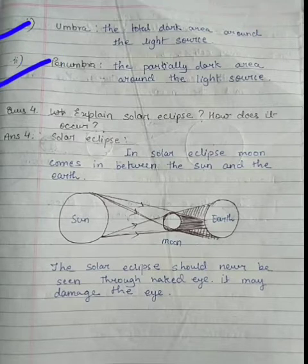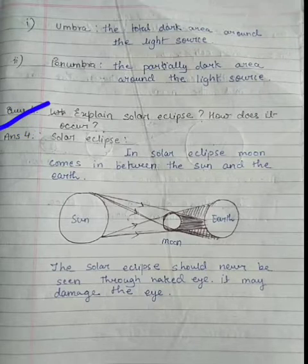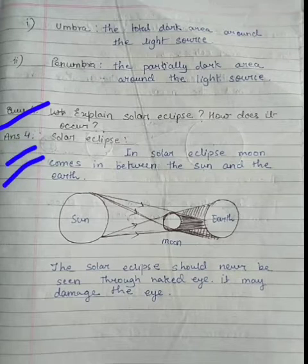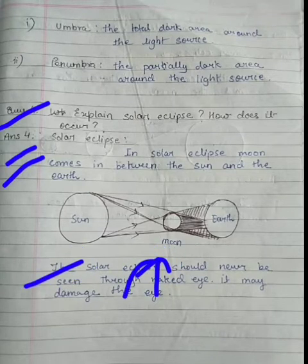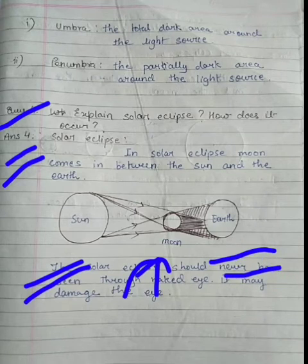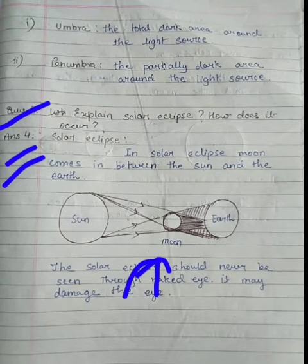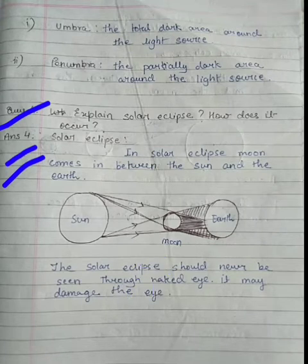Now students, fourth question is: explain solar eclipse. How does it occur? Students, you have to tell what is solar eclipse and how it occurs. So students, in solar eclipse, basically the moon comes in between the sun and the earth. You can see students in this diagram. The solar eclipse should never be seen through naked eye, it may damage the eye.